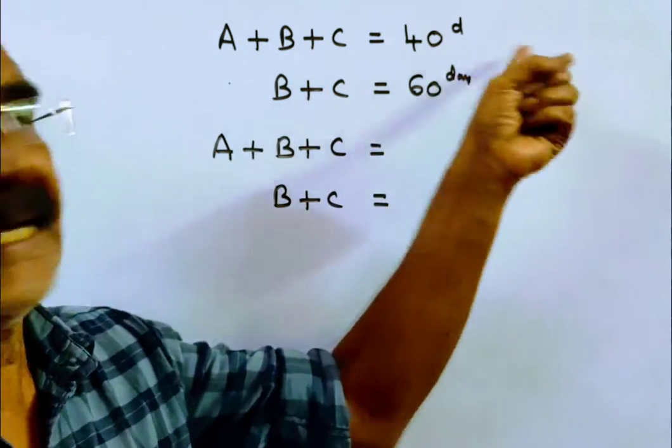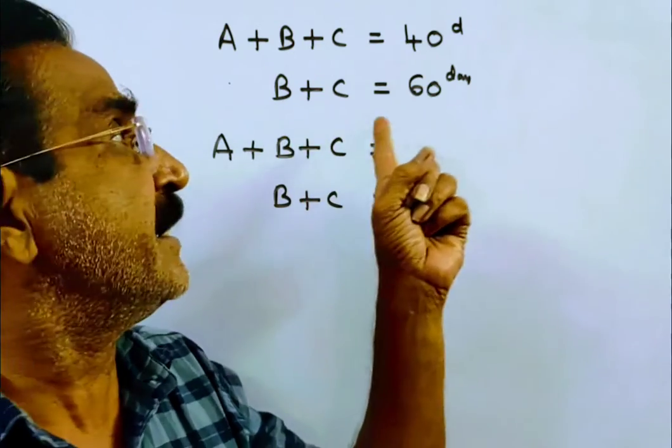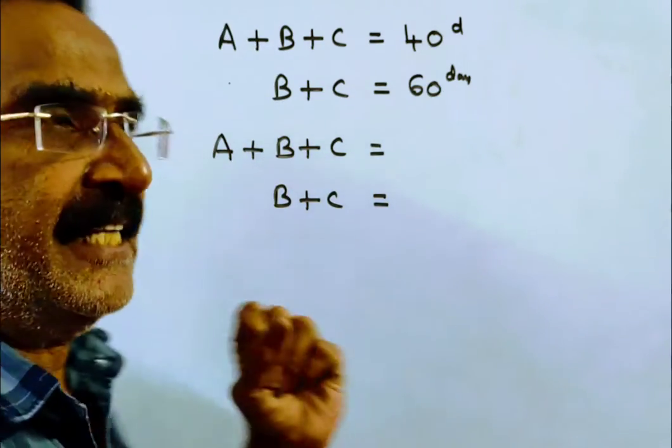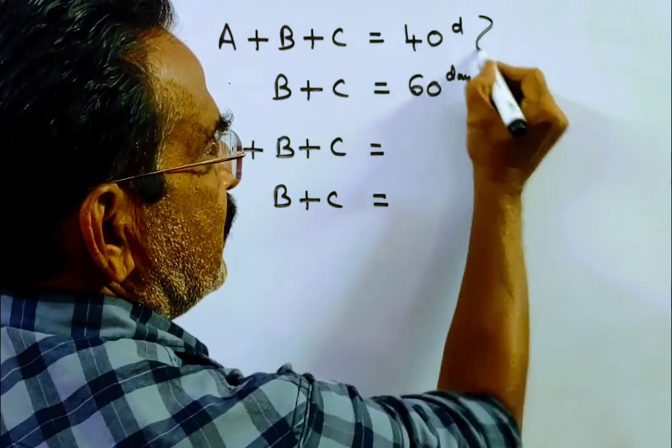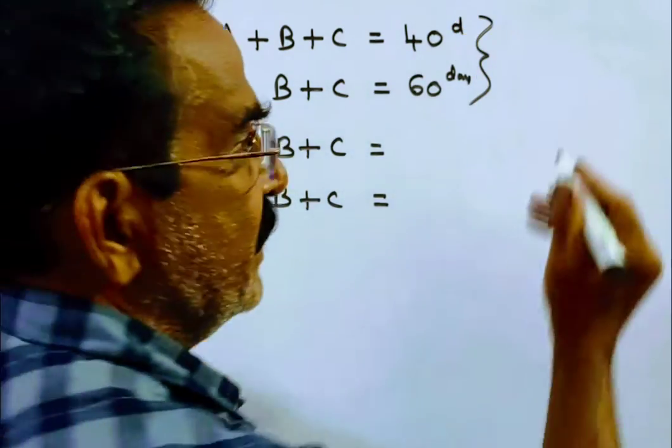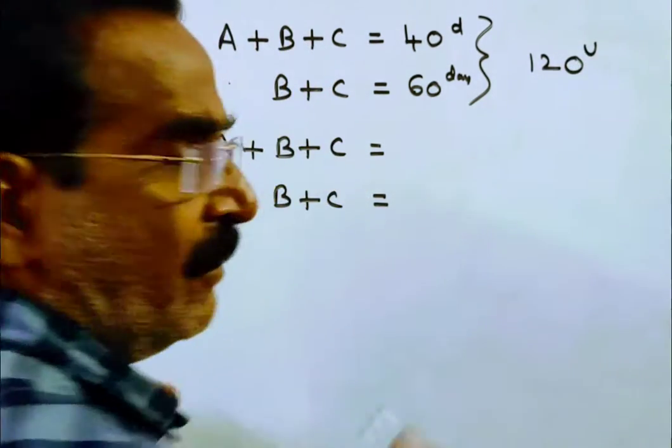A plus B plus C can do a certain work in 40 days, whereas B plus C can complete the same work in 60 days. Say the total work is the LCM of 40 and 60, so total work is 120 units.